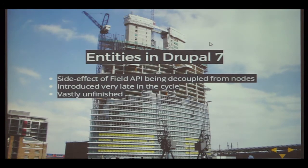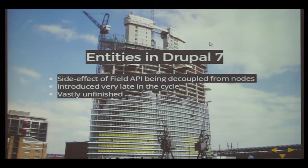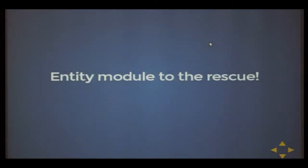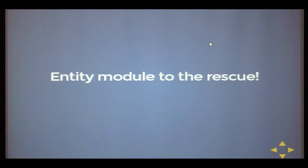Let's start with a little bit of history. Entities in Drupal 8 were nothing we planned for in Drupal 7. They are more like a side effect of the Field API improvements in Drupal 7, where the Field API was improved to work with multiple objects. In the end, those objects became entities, but it was pretty late in the Drupal 7 cycle, so it's really an unfinished API in Drupal 7 core. The Drupal 7 Entity API module jumps in to complete and complement a lot of that in contrib.